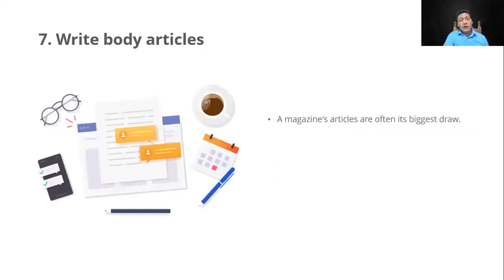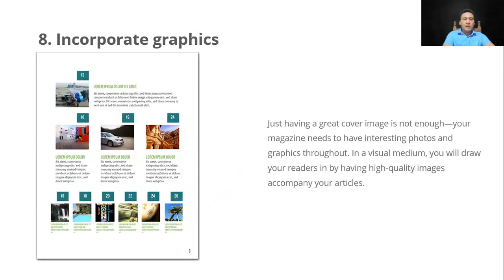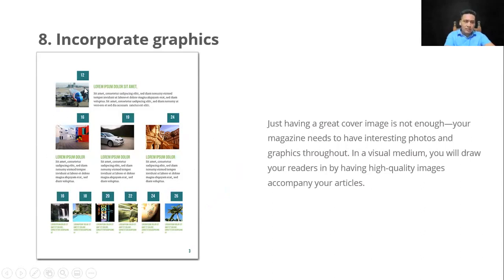Point 7: write your body articles. That's where you write content to attract clients, include activities in a paragraph. Then point 8: incorporate graphics — there's the image of the place, the description and review of the place, and since this is a tourism magazine, the activities that can be done there. That's what we're going to do — this is just an example of a graphic, generally speaking.